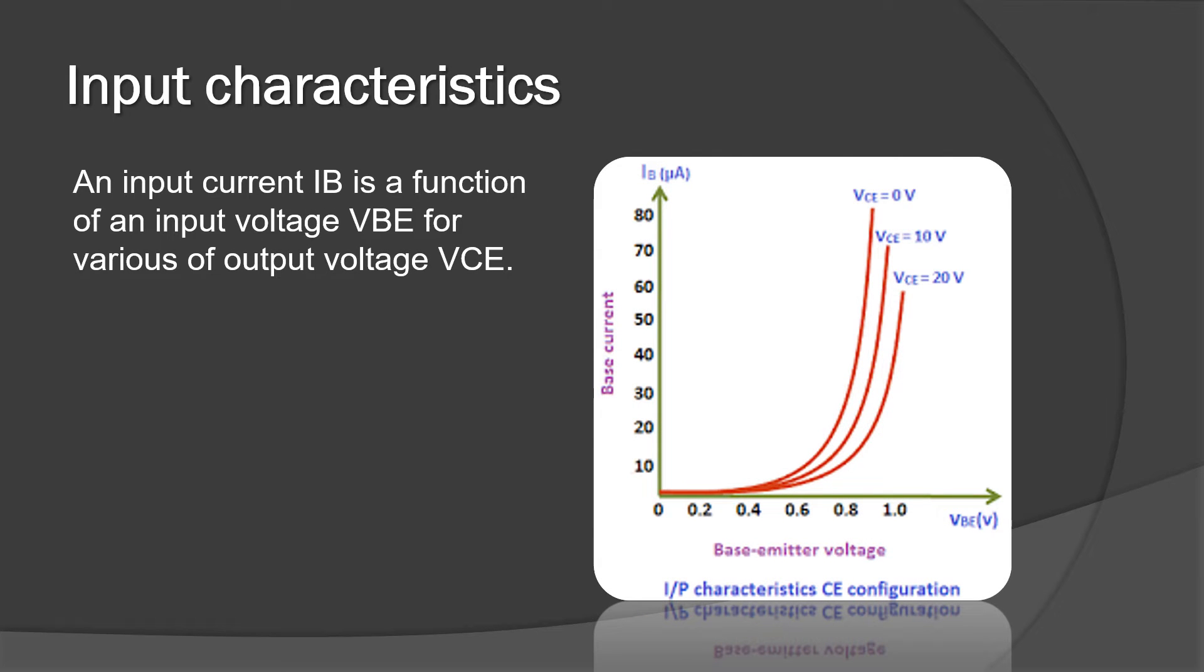This graph shows the input characteristics of common emitter configuration, where input current is a function of input voltage given between base and emitter for various output voltage between collector and emitter.